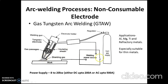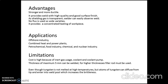Gas tungsten arc welding applications: these are generally used for aluminum, magnesium, titanium, and refractive materials, especially suitable for thinner metals. Advantages include providing stronger joints that are more ductile, higher quality welds with very good surface finish. Since the shielding gas is transparent, there is no visibility problem for the worker or supervisor. No flux is used, allowing wide variety of applications, and it provides concentrated heating of the workpiece.